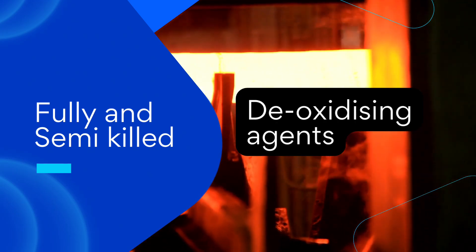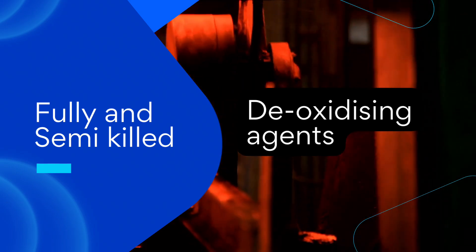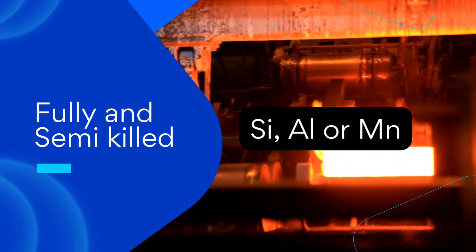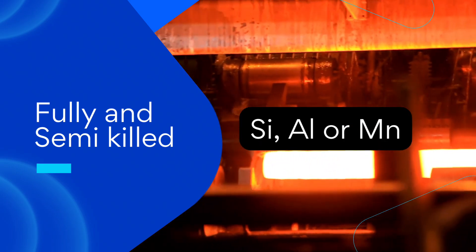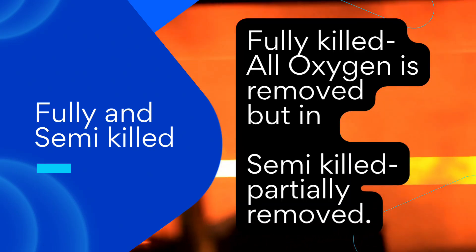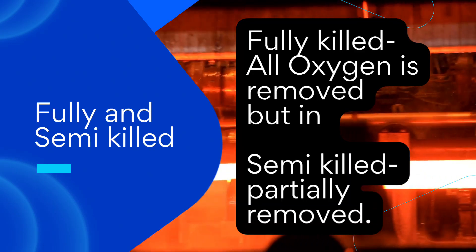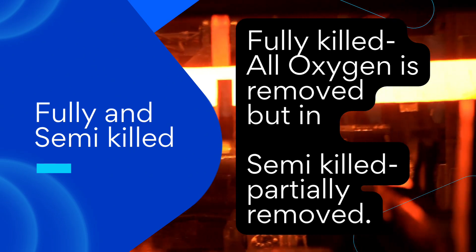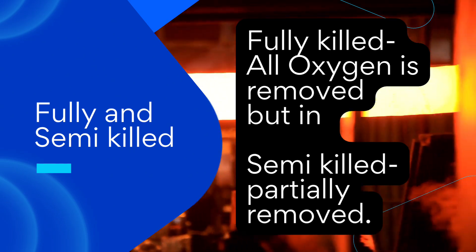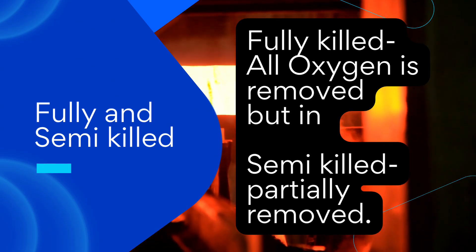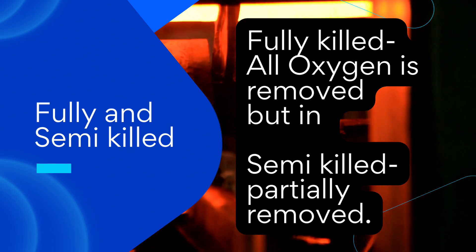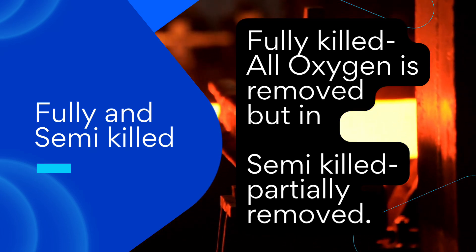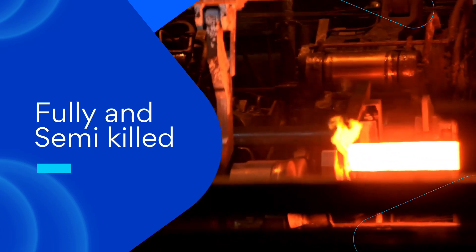In order to remove this oxygen, a deoxidizing process is initiated by adding deoxidizing agents such as silicon, aluminum, or manganese. In fully killed steel, all of this oxygen is removed, while in semi-killed steel, not all of the oxygen is removed. Some oxygen remains in semi-killed steel, causing a controlled amount of gas evolution during solidification.